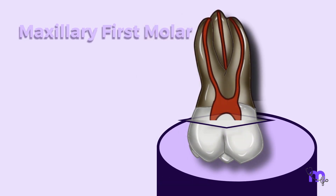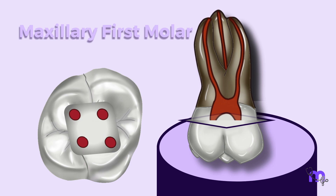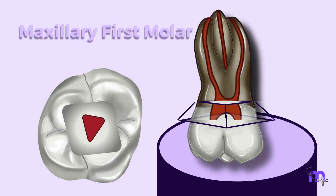The cross section of the tooth shows that the horns are arranged in a rhomboidal fashion. As the walls converge, the floor becomes triangular, eliminating the lingual wall.